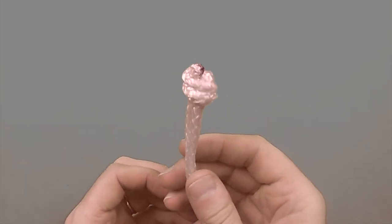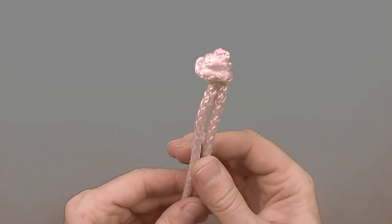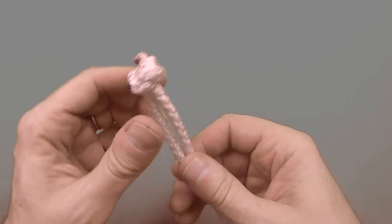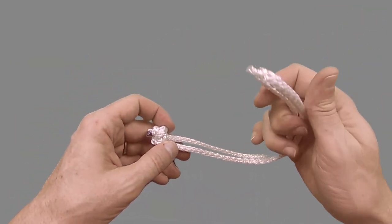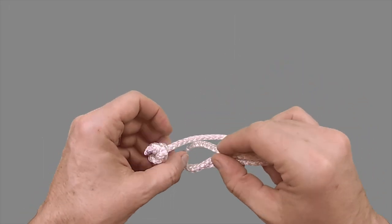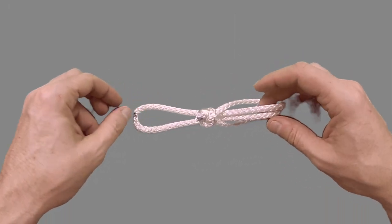Now it's just a simple case of creating the locking loop, which differs from traditional splice shackles. Take the loop, pass it in under itself, pulling it through past your stopper knot, like so.